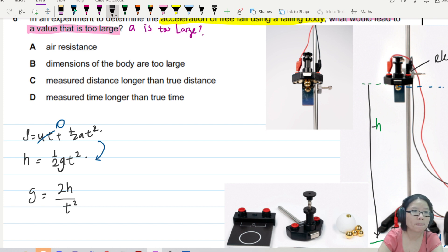So now, if the measured distance is H is longer than the true distance. So for example, for option C, H is too large. So if H is large, what happens to your G? Your G is too large. Leading to G too large. So C is a viable option. I'll put a check mark here.